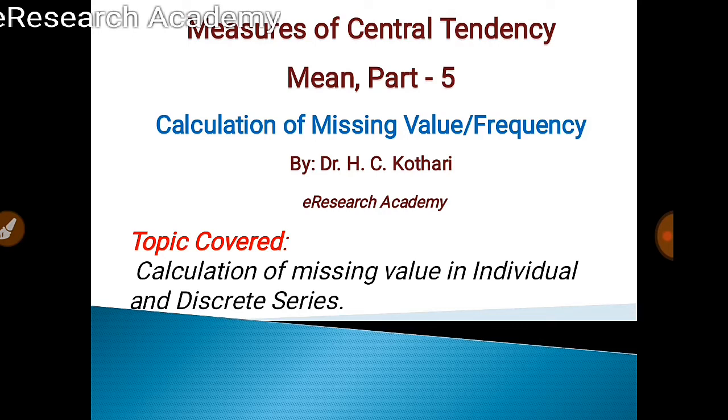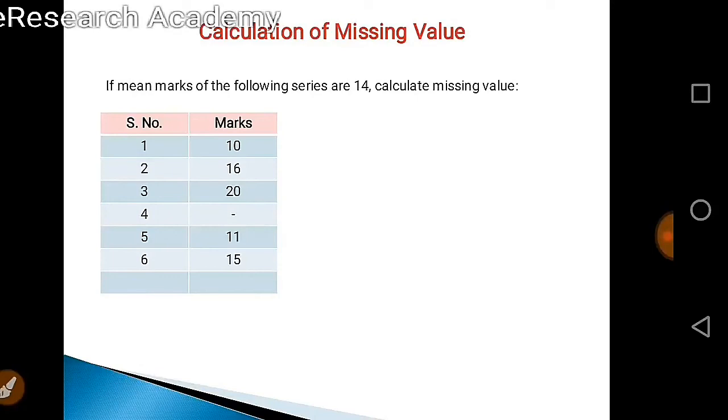This lecture is in continuation of our previous lecture on measures of central tendency. Let's start the very first question from individual series. We are given some serial numbers here, these are 6, so n equals 6.